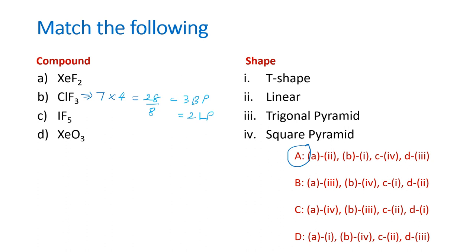28 divided by 8 will be 3 bond pairs because 8 times 3 is 24, and then 4 remaining divided by 2 will become 2 lone pairs. ClF3 has 3 bond pairs and 2 lone pairs. The number of bonds is of the AX5 type. Its geometry will be a trigonal bipyramidal geometry. The lone pair of electrons will occupy the equatorial position, so the molecule appears like a T shape. ClF3 matches with T shape.